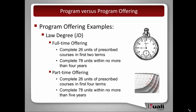Students must complete 78 units within no more than four years in order to complete the program. There may also be a part-time offering of the law degree program. It will require the same 26 units of prescribed courses, but they'll give them four terms, and students must complete the 78 units within no more than five years — typically requiring summer school. That's an example of how the satisfactory progress requirements differ between the two offerings, even though they must complete the same 78 units by the end of their study.